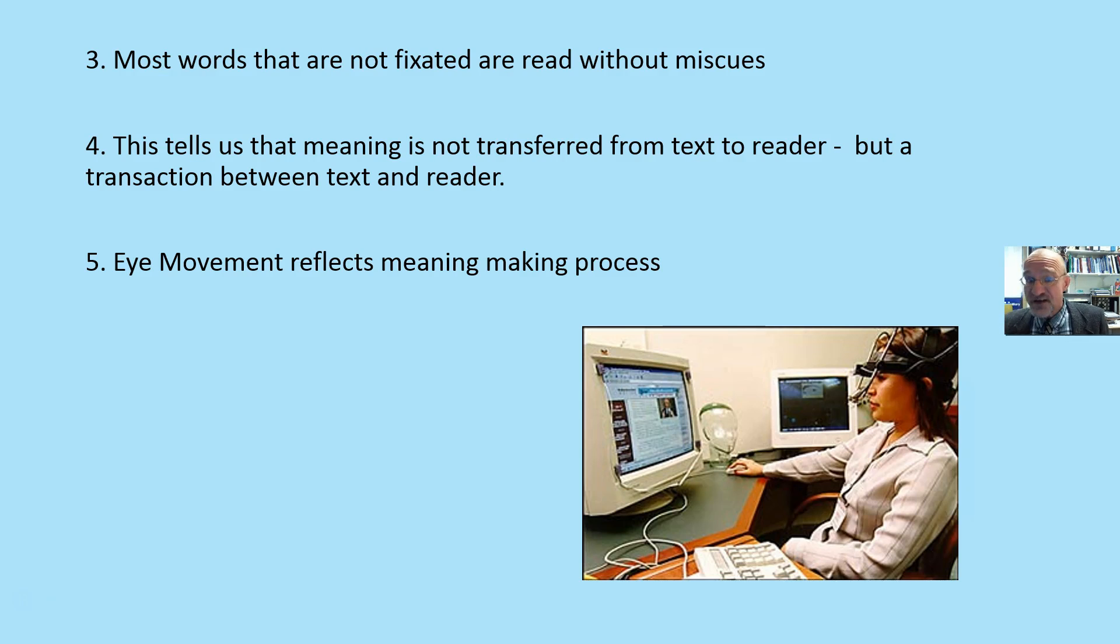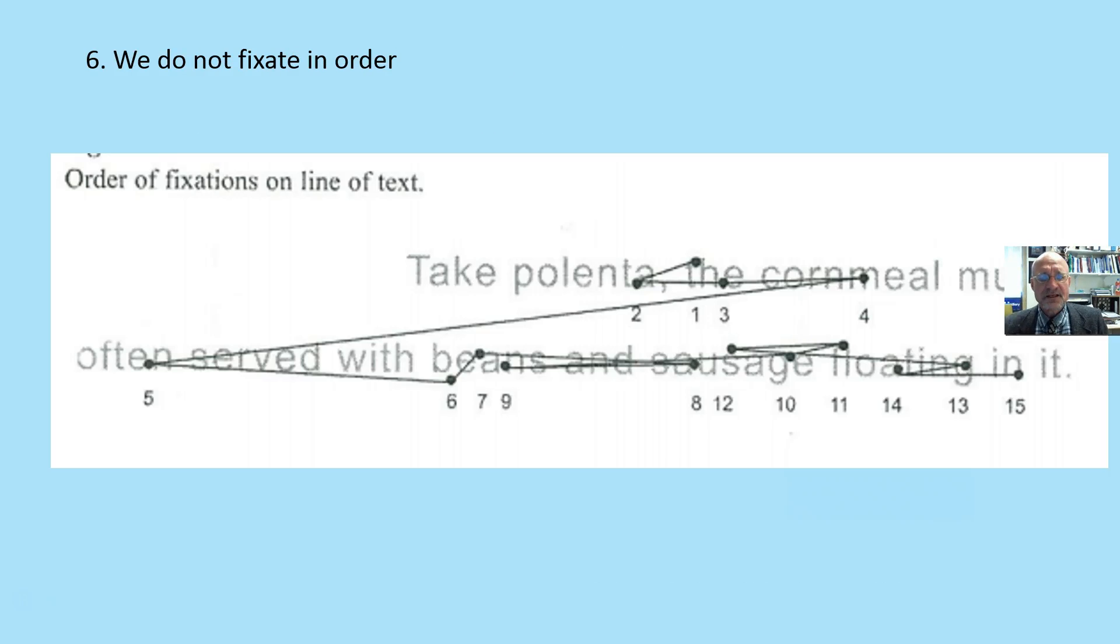Most of the words that are not fixated on are read without miscues. Even though our eyeball doesn't stop, we read them just fine. This tells us that meaning is not transferred directly from the text to the reader, but it's a transaction between the text and the reader. And again, 10 times more information is flowing down than flowing up. The eye movement reflects a meaning-making process. The brain is trying to make sense of this, to create meaning.